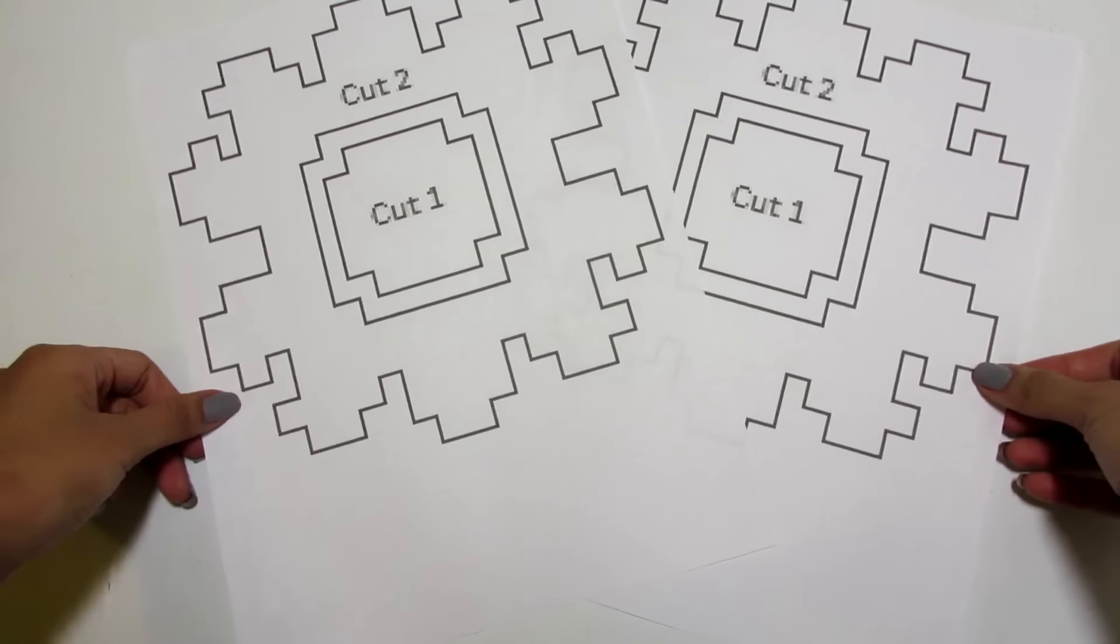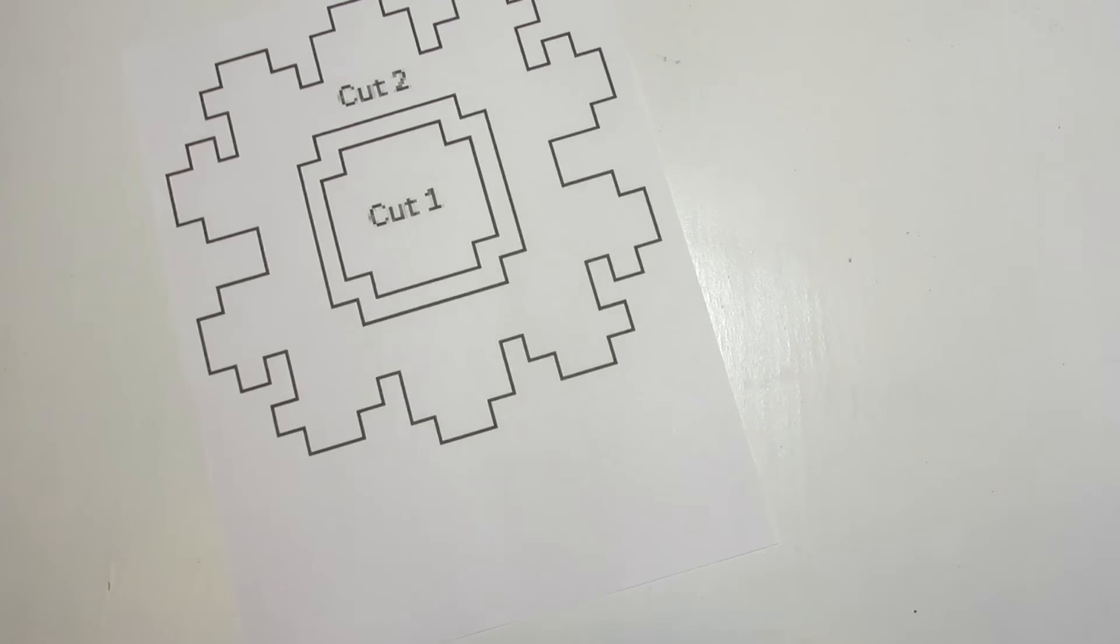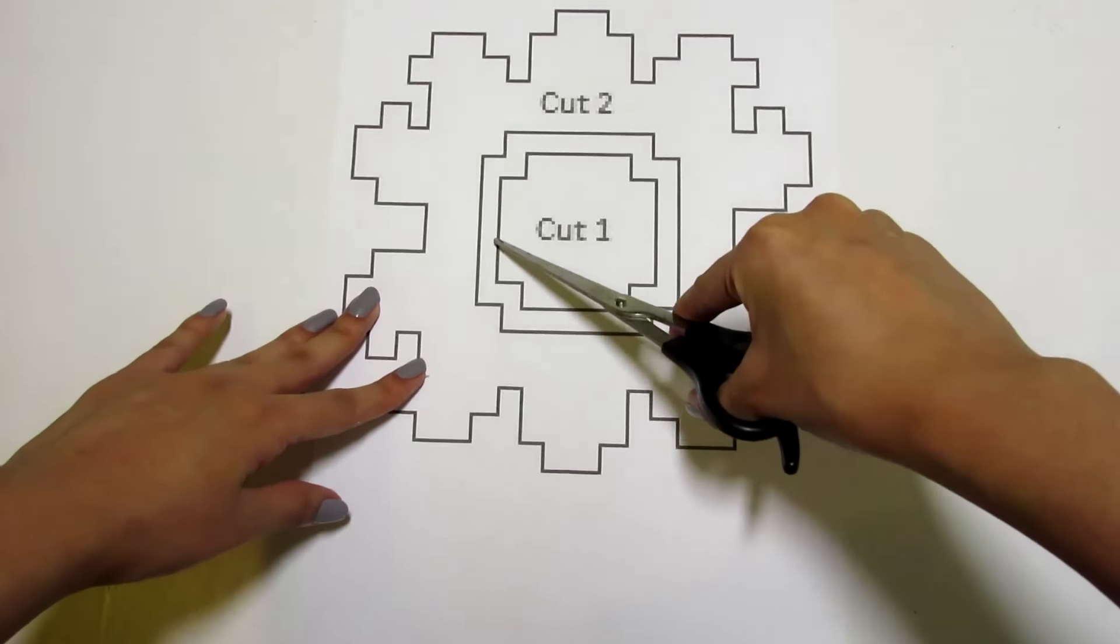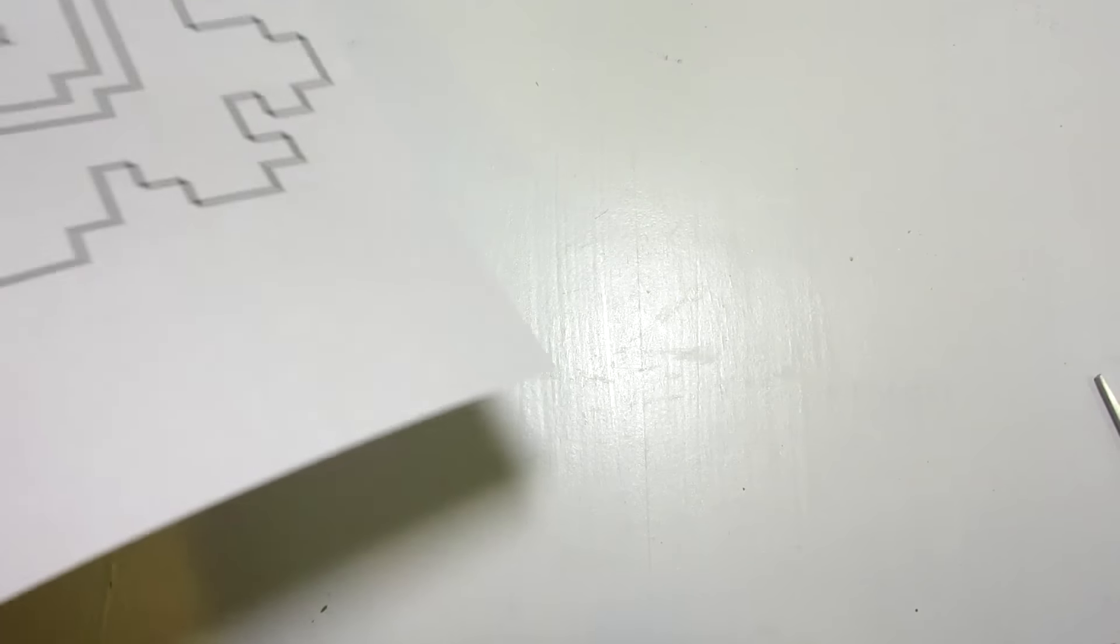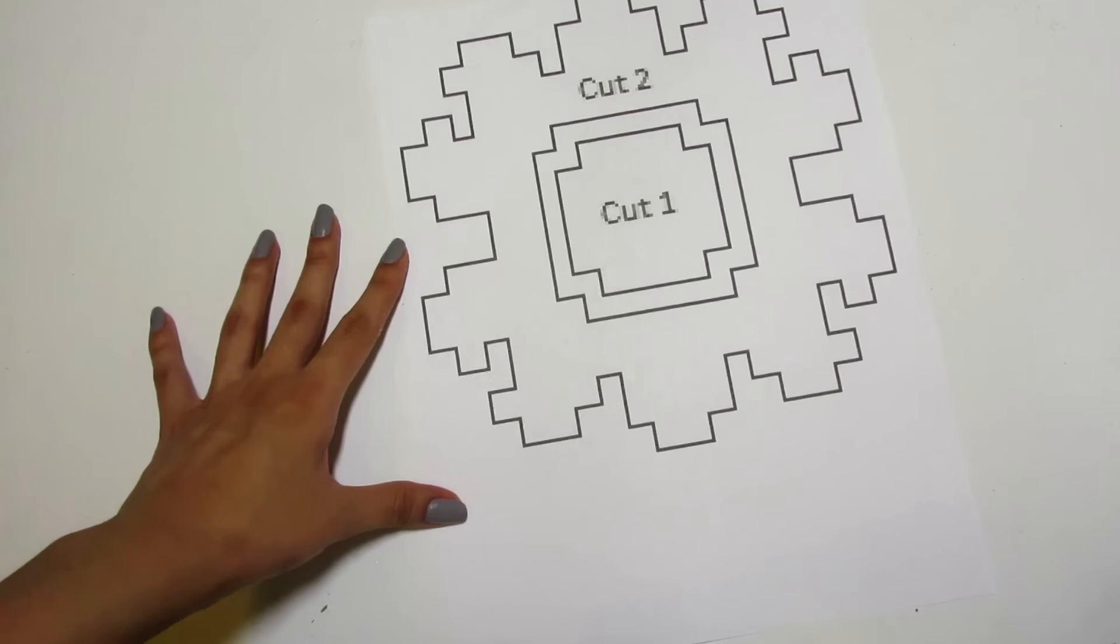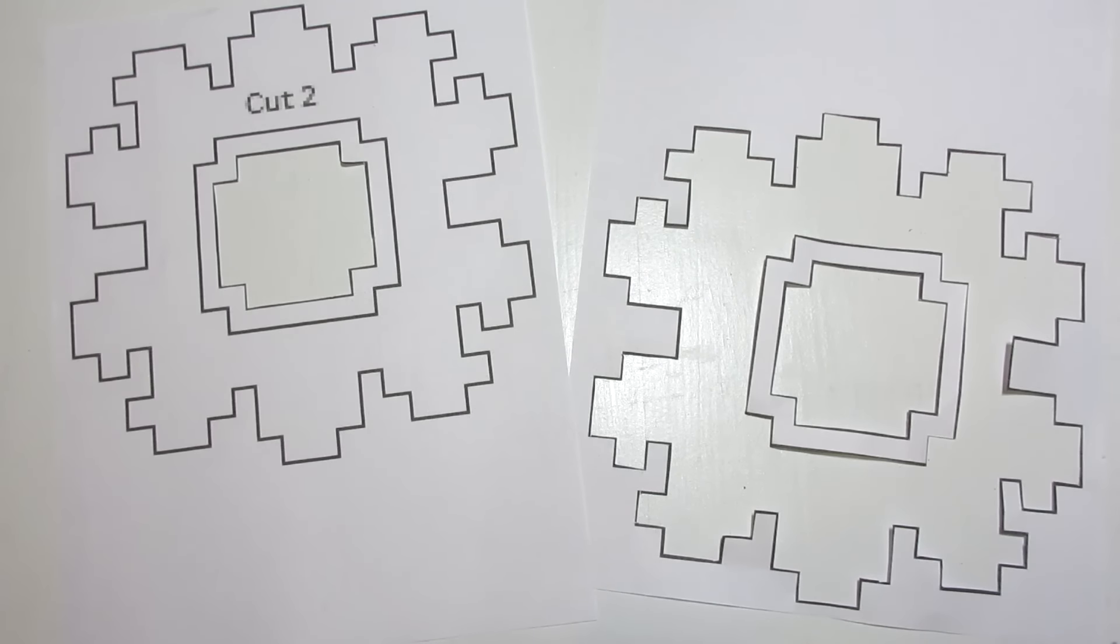While we wait for the glue to dry, grab your two sheets of paper and print out two copies of the template that I have down in the description below. Grab one copy and set the other aside. Grab your scissors and cut out the section that says cut 1. Make sure you take your time because these pieces are going to act as stencils. So now grab your second copy and cut out both cuts 1 and 2. So here are the stencils that you should be left with.